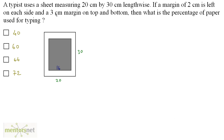A margin of 3 cm is left on top and bottom — 3 cm on top and 3 cm on bottom, so total 6 cm of margin is left. The vertical length of the printing area will be 30 minus 6, and that's 24. Now let us find out the total area of this paper: length times breadth, that's 20 times 30, which is 600.